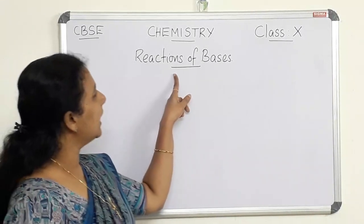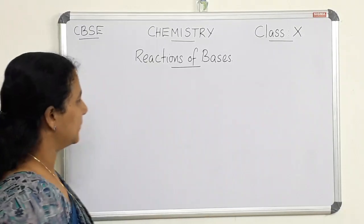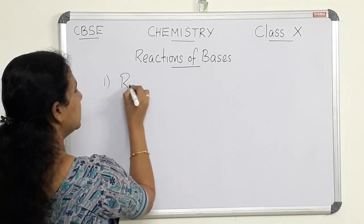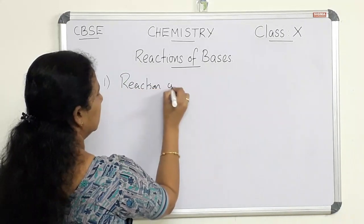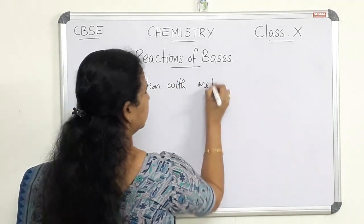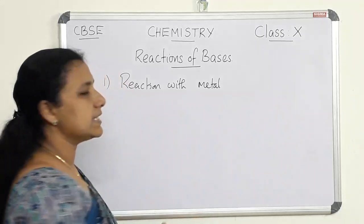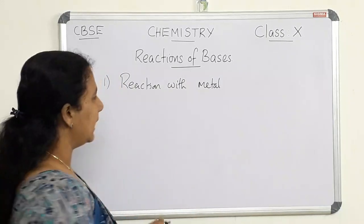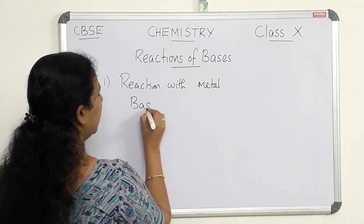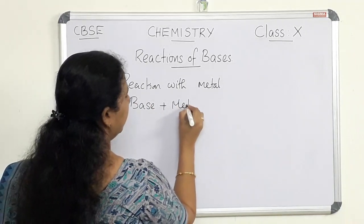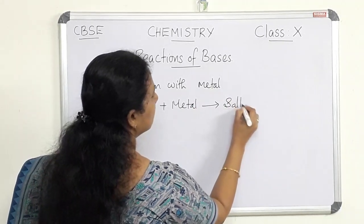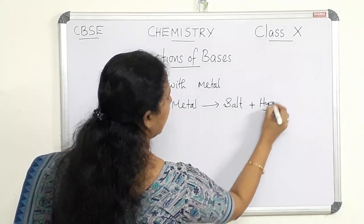Let us see what are the reactions of bases. The first reaction is reaction with metal. What is the reaction between a base and a metal? Let us write the general equation: Base plus metal gives salt and hydrogen gas.